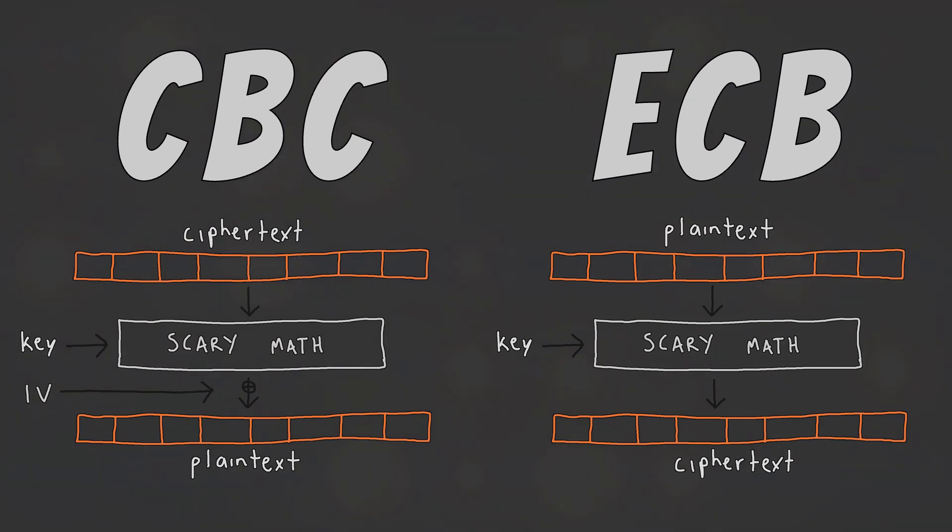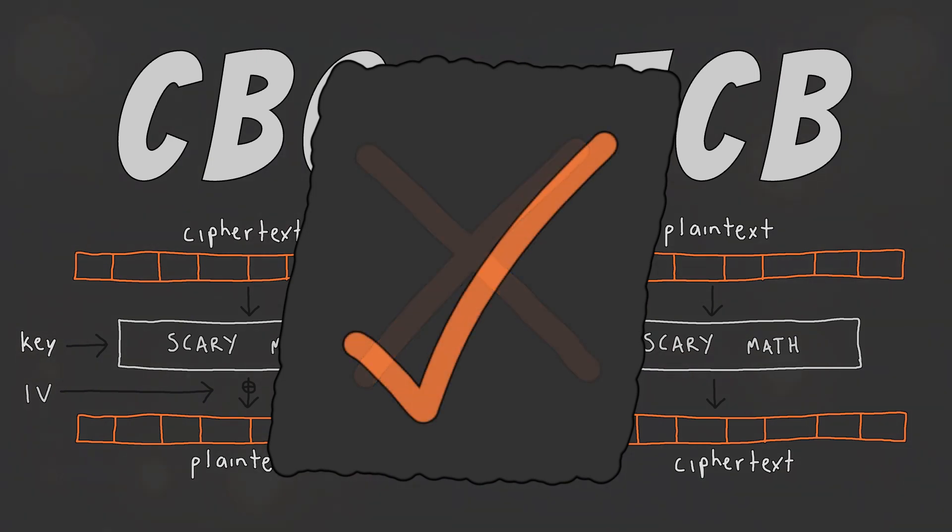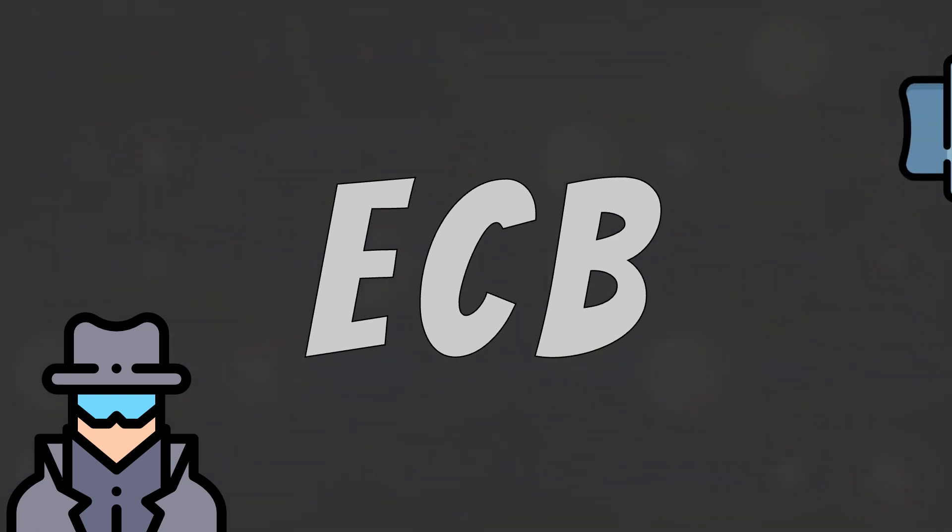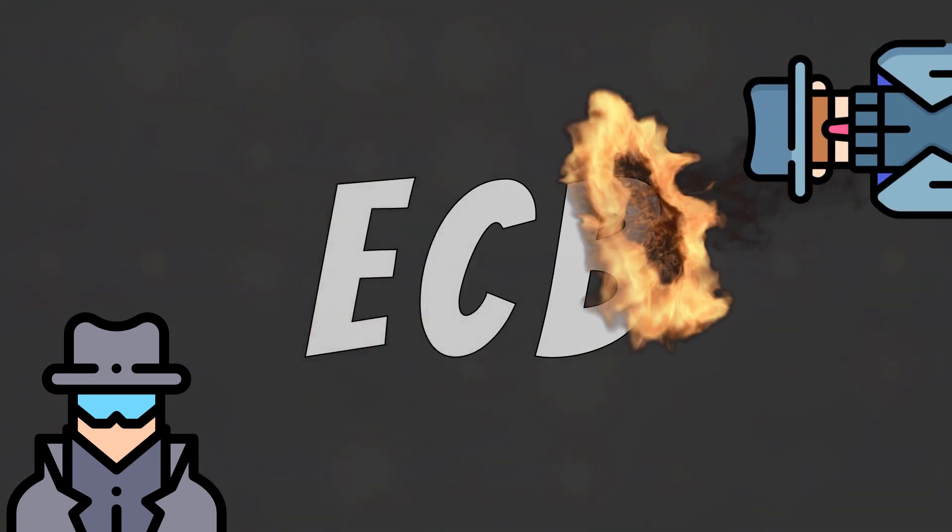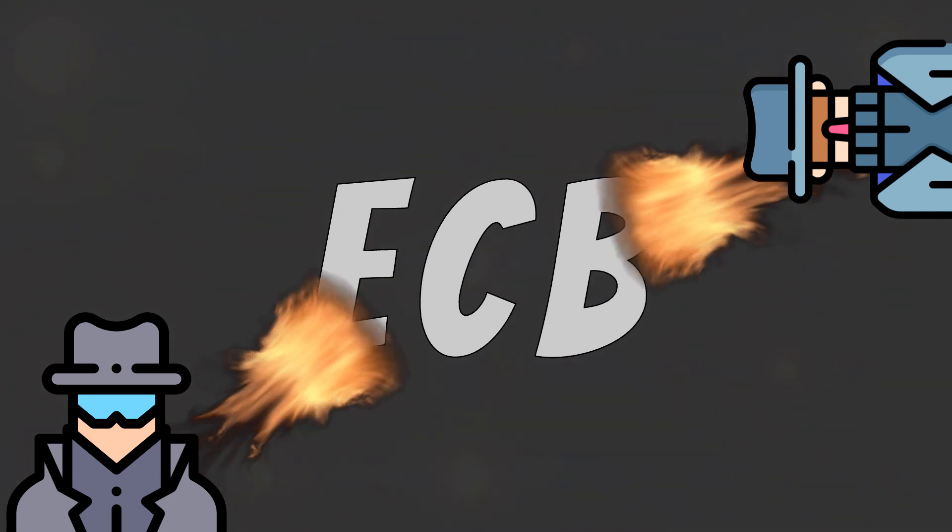In this video, we haven't actually discussed any potential vulnerabilities in the ECB or CBC modes of operation. We have just covered the basics of how they work. Now that we understand how they work, we can start to understand how we can attack and break their implementations. In our next cryptography video, we are going to do just that. We are going to demonstrate an attack which can be performed against ECB encryption due to the properties we have just covered. So make sure to subscribe so you can catch that video and all future CTF related videos released on this channel.